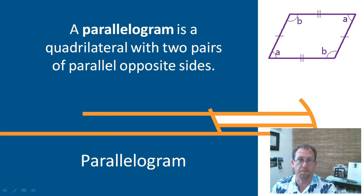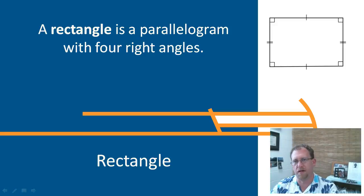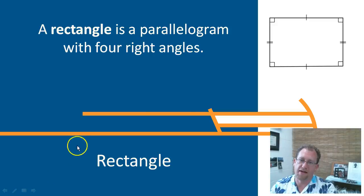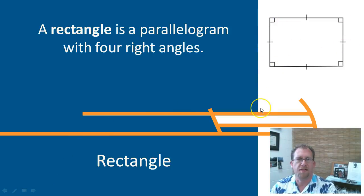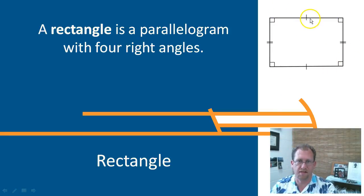Now if you take a parallelogram — instead of having it kind of slanty — if you have a parallelogram where the opposite sides are congruent and parallel, and you also have all angles as 90 degrees, then you have a rectangle. 'Rect' means right, so this is a right-angled quadrilateral where all four angles are 90 degrees. As a consequence, the opposite sides are congruent and parallel.